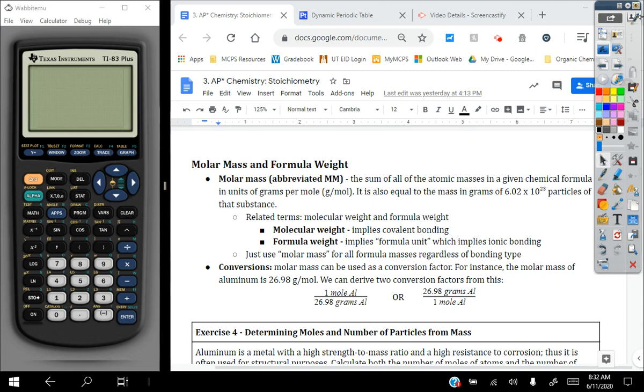But based off of our definition for molar mass, that is essentially synonymous with grams per mole. So you can use the average atomic masses on the periodic table to get your units of grams per mole. It's also equal to the mass in grams of 6.02 times 10 to the 23rd particles of that substance, which is why we're able to use AMU and grams per mole interchangeably.